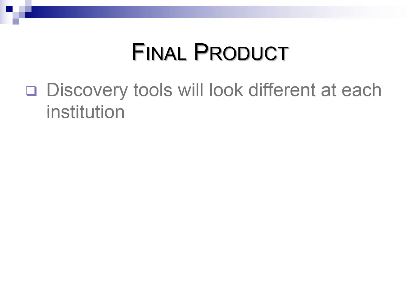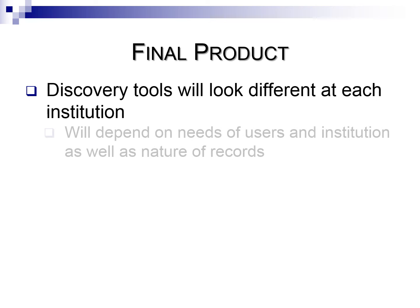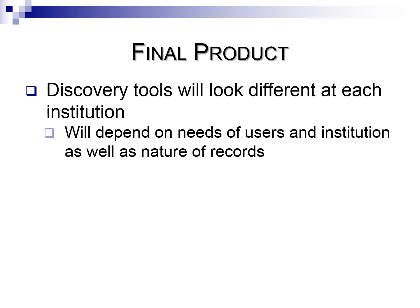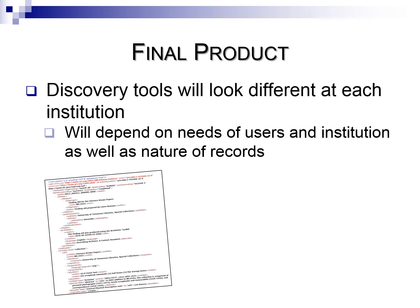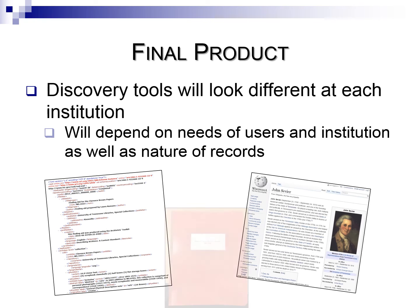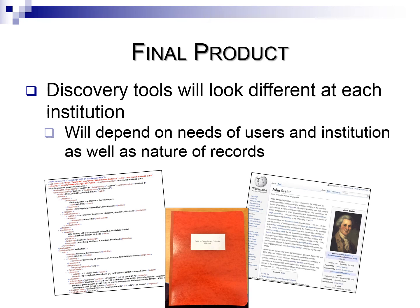The process of archival description results in a certain kind of product that helps users find what they might be looking for. These discovery tools may, and inevitably will, look different at each institution. Much like the process of archival description, the final descriptive output, or combination of outputs, will depend on the needs of your users and institution, as well as the nature of records being described. One of the advantages of DACS is that it is an output-neutral standard that can be applied to a variety of different transmission and encoding contexts: an EAD-encoded finding aid, a Wikipedia page, a handwritten index, an accession record in ArchivesSpace. These are just a few examples of the many potentially appropriate descriptive outputs. Each of these has the potential to be DACS compliant.